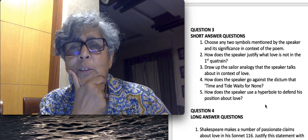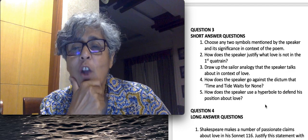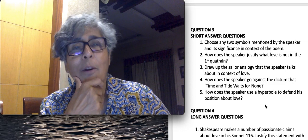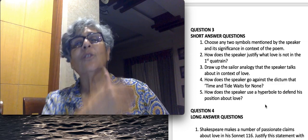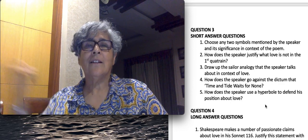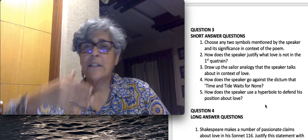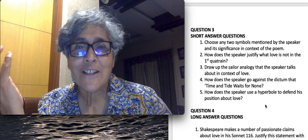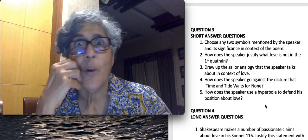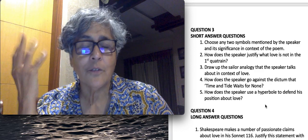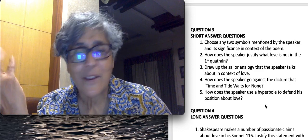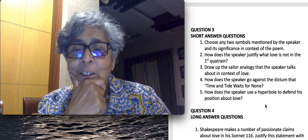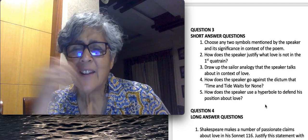The third one is draw up the sailor analogy that the speaker talks about in context of love. I put the sailor analogy because of the ship and the pole star and the ever-fixed mark, the distance, the heights, the mystery of love that is so constant, like the pole star which remains at one fixed point. That's a mystery of astronomy, of geography. That is based on the second quatrain. You will have the entire thing about the sailor analogy.